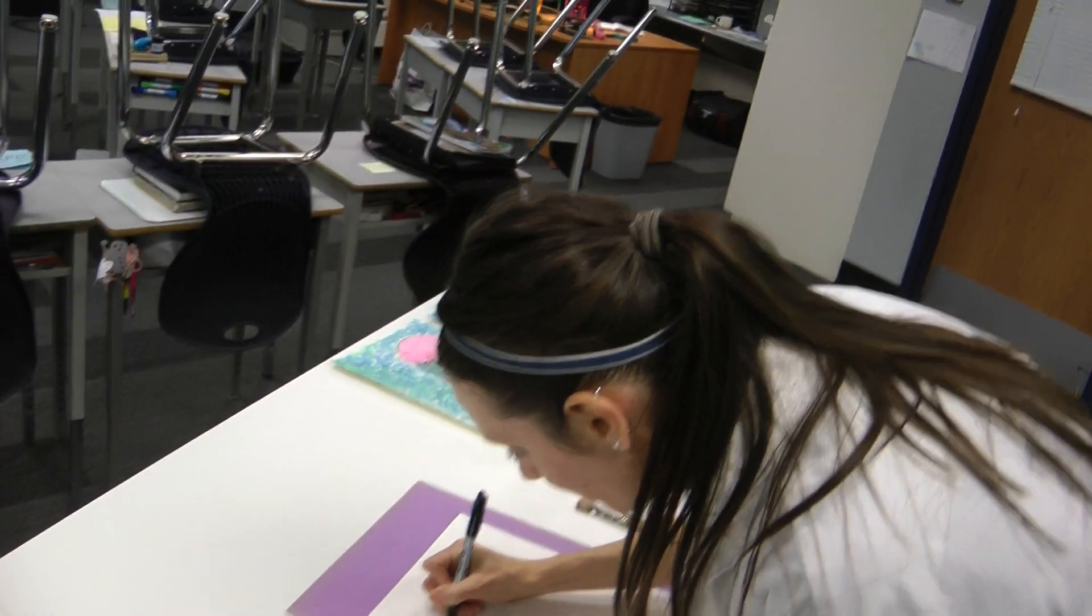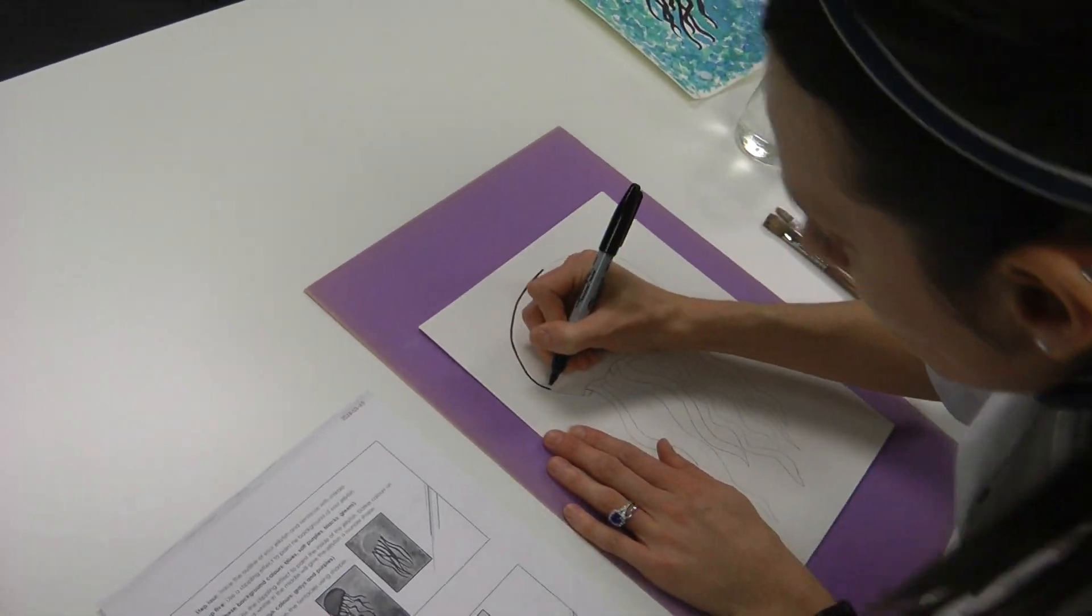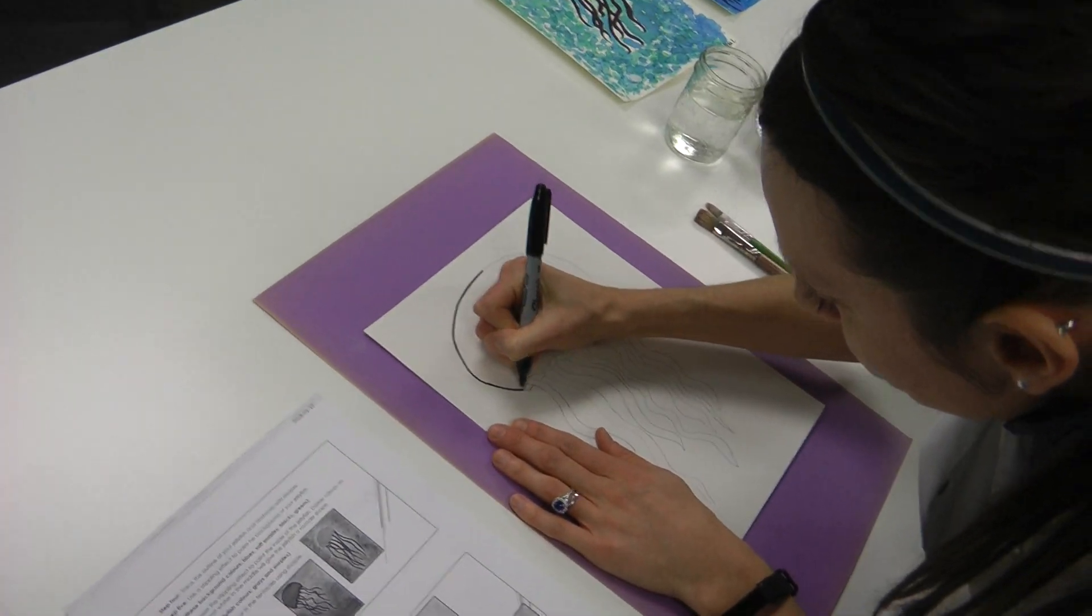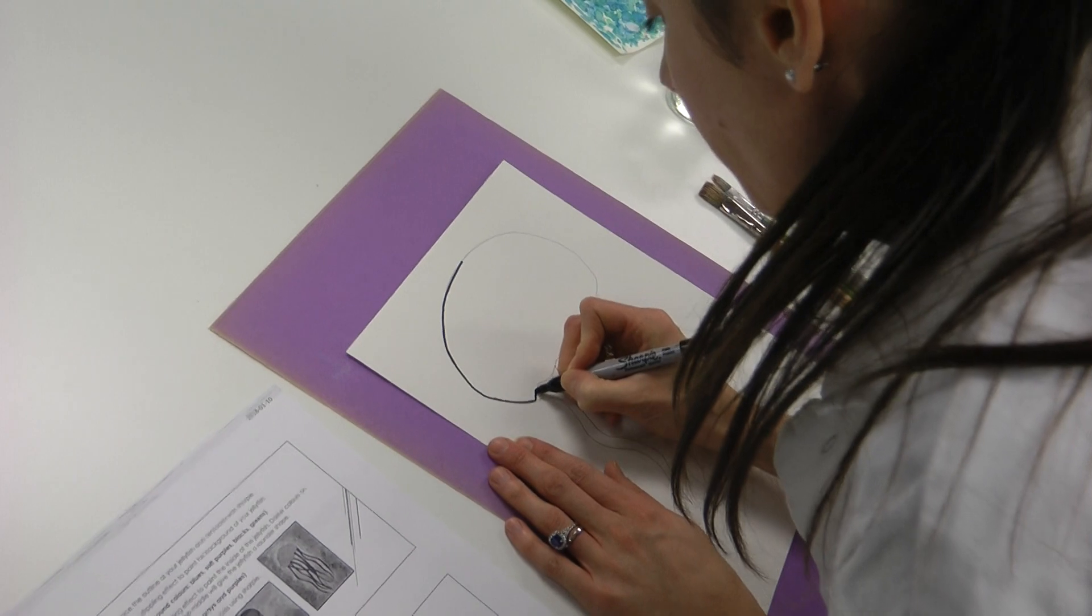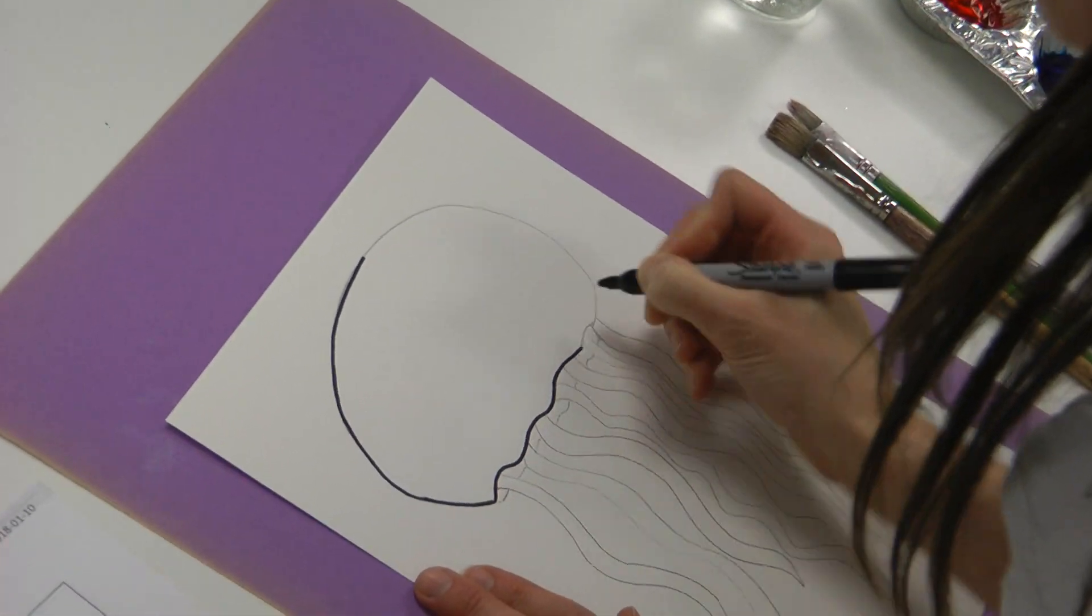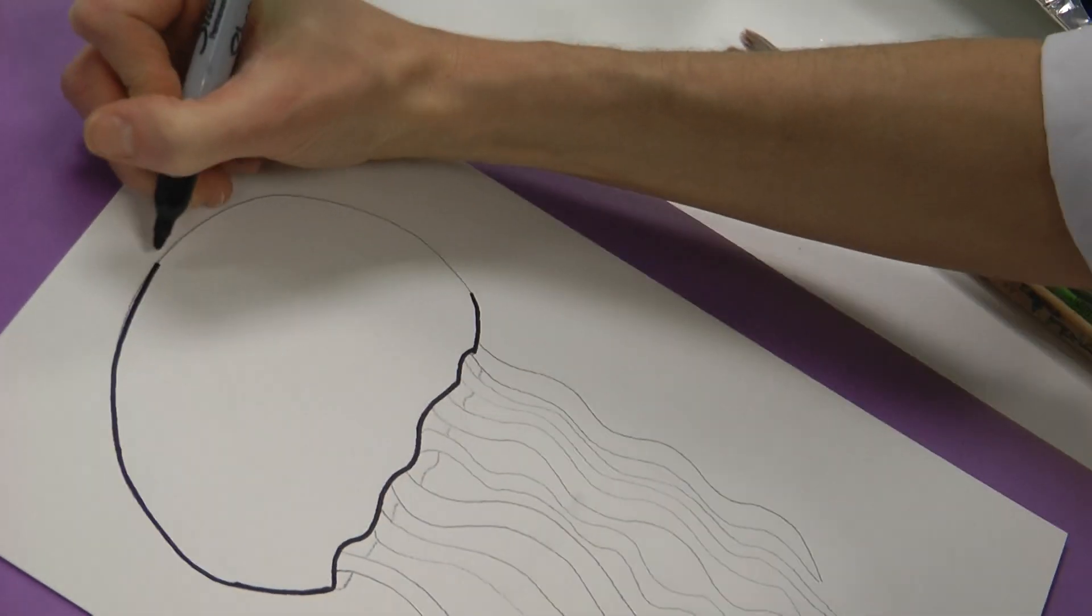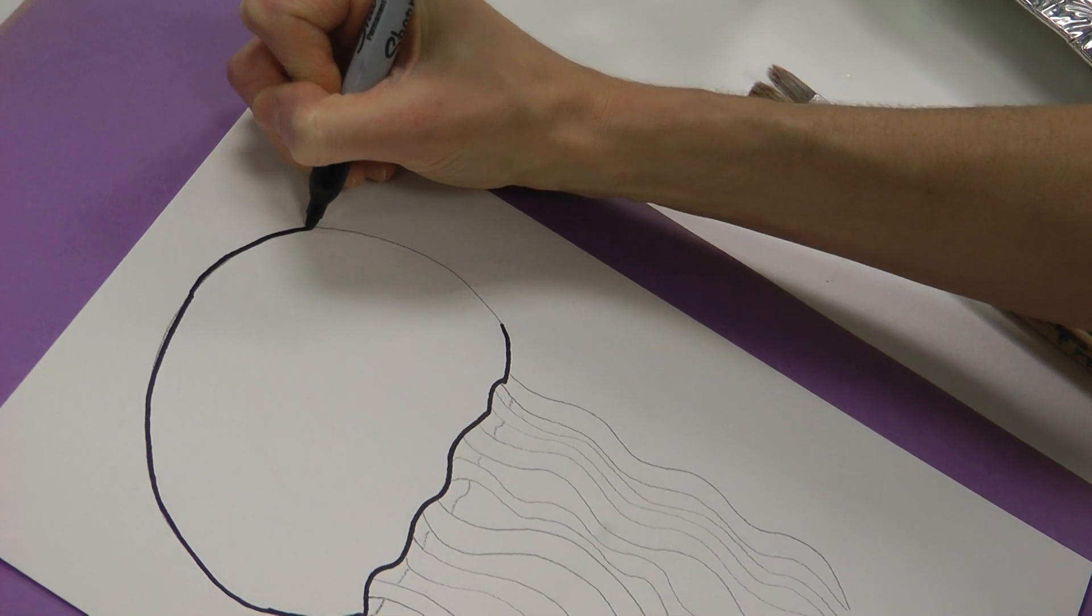Step four. Trace the outline of your jellyfish and tentacles with Sharpie. We have Sharpies. Be careful with these. They stain. Should you ever get it on your face? It comes off really well with hairspray. All right. Here we go. So shocking. Right? Isn't it? I may have had a little bit of fun at summer camp and drawn on people's faces.